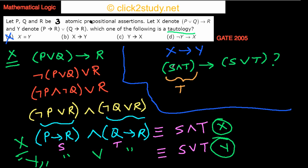If S and T is true, then S must be true and T must be true. Since S is true, S or T is automatically true. For the case where the antecedent is false, the implication is always true regardless. So (S and T) implies (S or T) is indeed a tautology — that's option B.